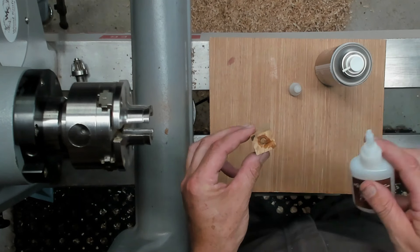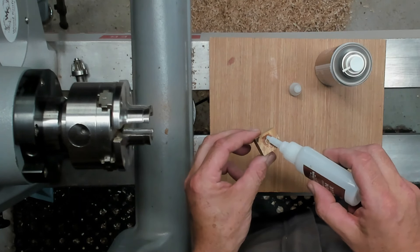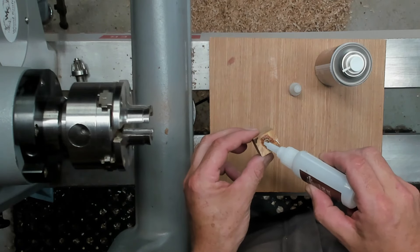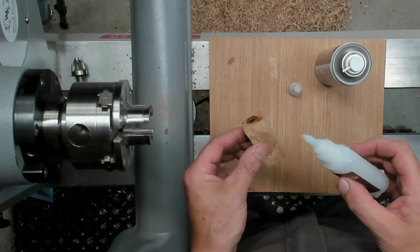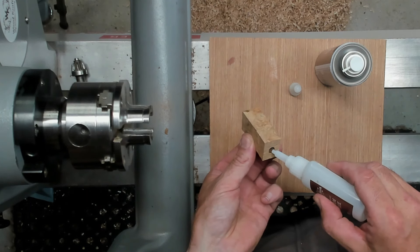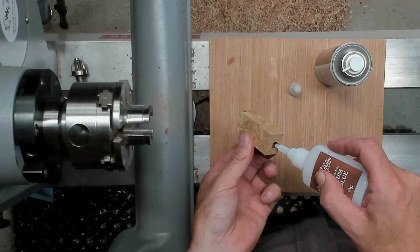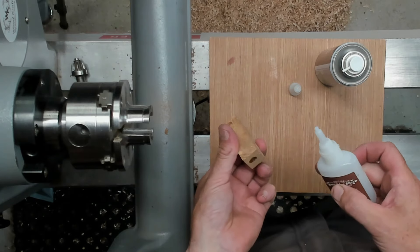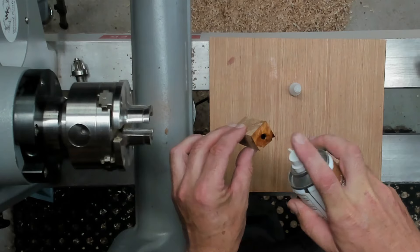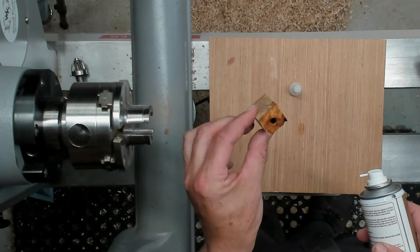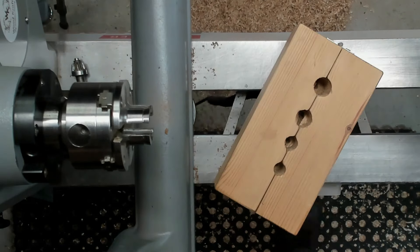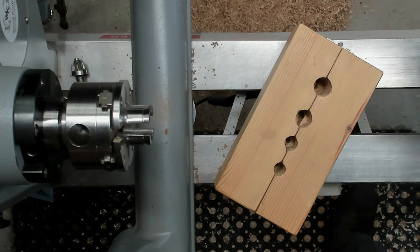Just advance the drill bit in slowly and just retract it and keep the swarf clear of the drill bit every half inch or so. Nearly there, I can move the other side now.